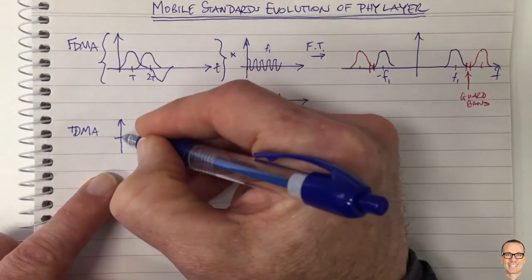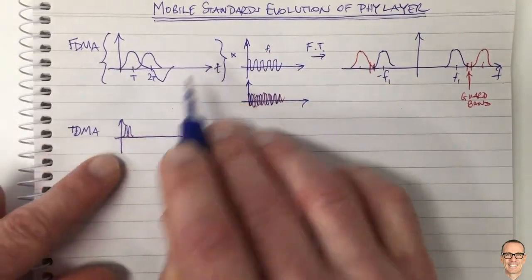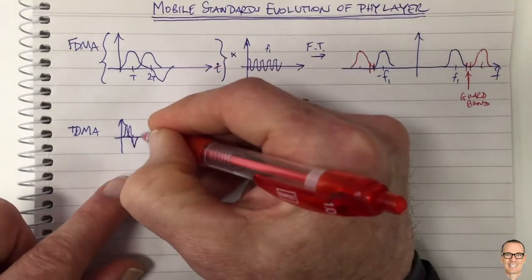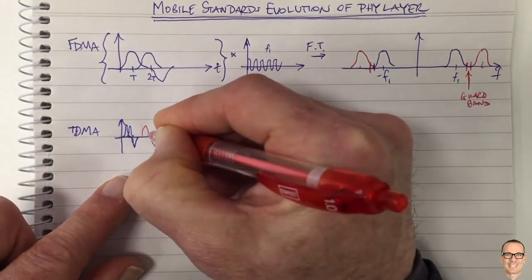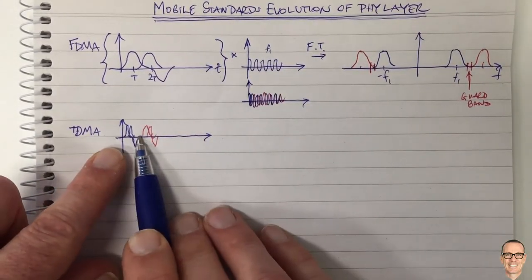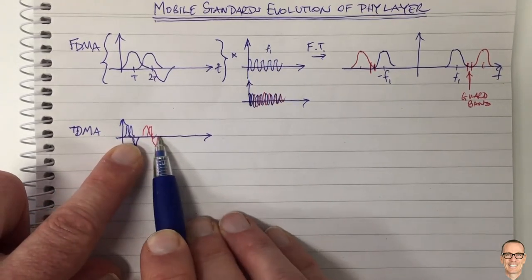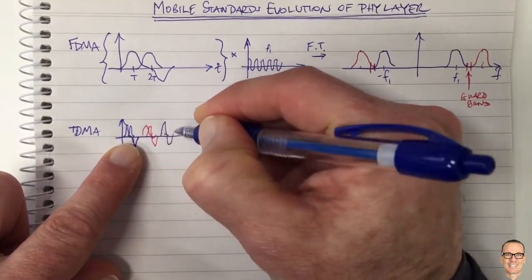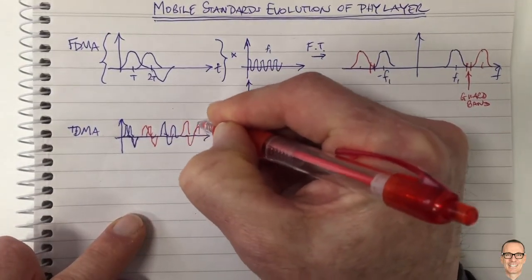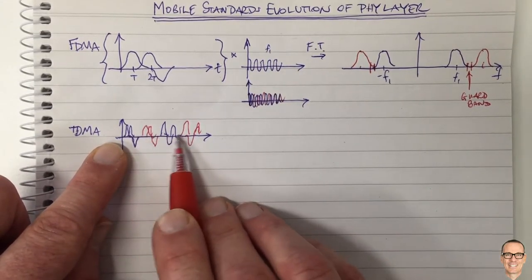If we send at a higher rate, we can take all of the symbols from a block and send them faster — at a higher symbol rate — and then have another user send after this. So the blue user sends quickly and then stops, and the red user then starts sending. With two users, you go back and forth: blue sends, then red sends, and so on. This is time division multiple access. You have to send in a shorter period of time because you must wait for the other user before you can start again.